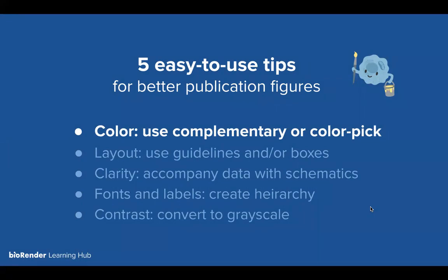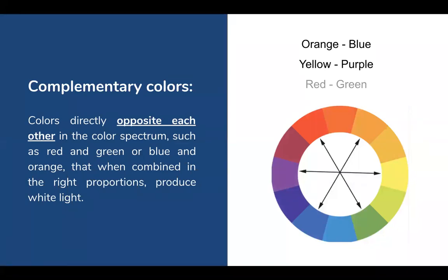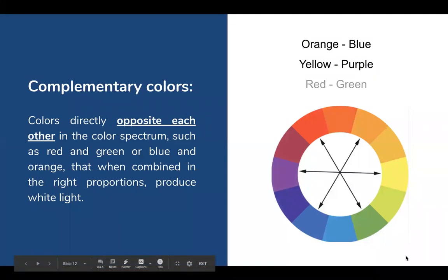Tip one is color. We like to talk about using complementary color schemas — using the eyedropper or color pick tool in software you're already using. Complementary colors are opposite colors on the color wheel. Red and green are complementary, though we recommend avoiding that combination for colorblind audiences. Orange and blue is a very popular complementary combination, as is yellow and purple. When in doubt, use these combinations — they generally work quite well.